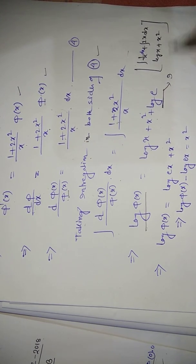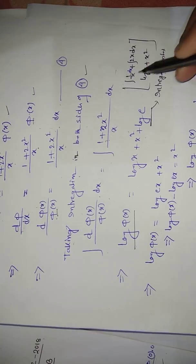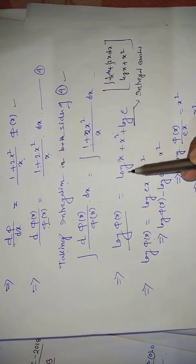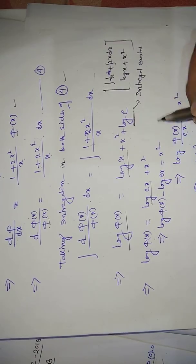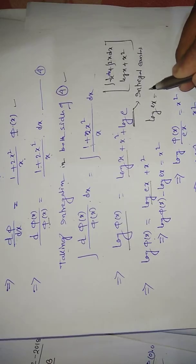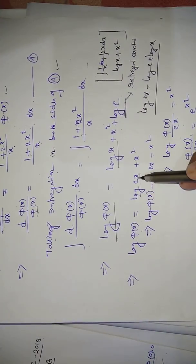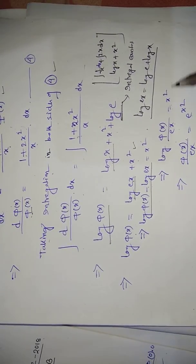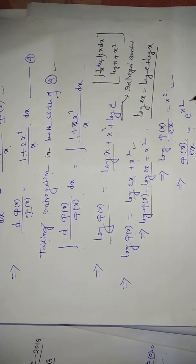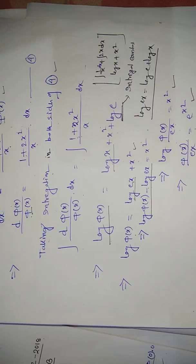Integrating: ln|φ(x)| = ln|x| + x² + ln|c|, where c is the integration constant. Using logarithm properties: ln(φ(x)) − ln(cx) = x², so ln(φ(x)/cx) = x², giving φ(x)/cx = e^(x²). Therefore φ(x) = c·x·e^(x²). This is equation (5).